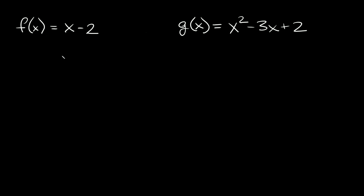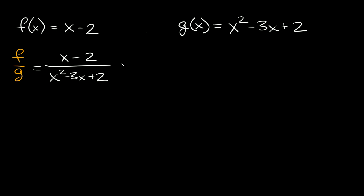Now let's talk about some division problems, because these are going to be just a little bit harder. We have f of x equal to x minus 2, and g of x equal to x squared minus 3x plus 2. We're going to do f divided by g, so that's x minus 2 over x squared minus 3x plus 2. To simplify, we can factor the denominator: we need two numbers that add to negative 3 and multiply to positive 2, which are negative 2 and negative 1. So the denominator factors as (x minus 2)(x minus 1).